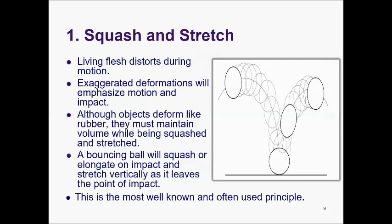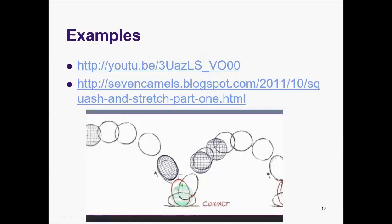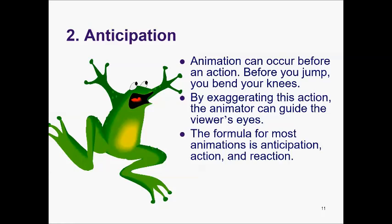Principle number one is squash and stretch. Living flesh distorts during motion through exaggerated deformations that emphasize motion and impact. Although objects deform like rubber, they must maintain volume while being squashed and stretched. A bouncing ball will squash on impact and stretch vertically as it leaves the point of impact. This is most well known as squash and stretch.